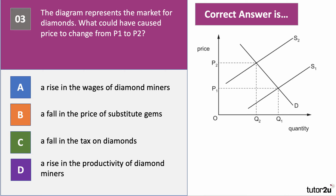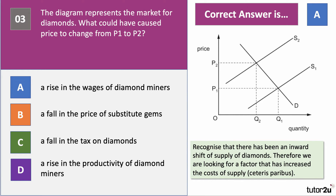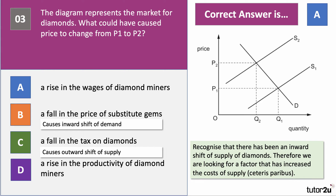The price has increased from P1 to P2, so something must have caused the supply curve to shift to the left. The correct answer is A — an increase in the wages of diamond miners. We're looking for a factor that causes increased cost of supply, producing an inward shift of the supply curve. Higher wages increase costs. A fall in the price of substitute gems would cause an inward shift of demand; a fall in tax on diamonds or higher miner productivity would each cause an outward shift of supply.